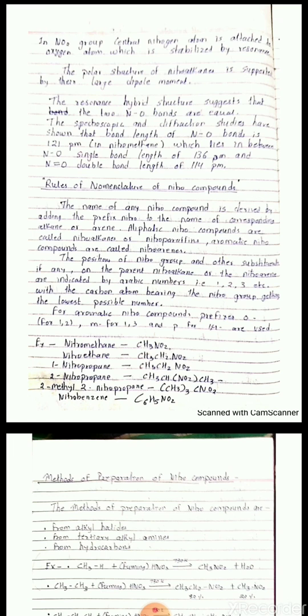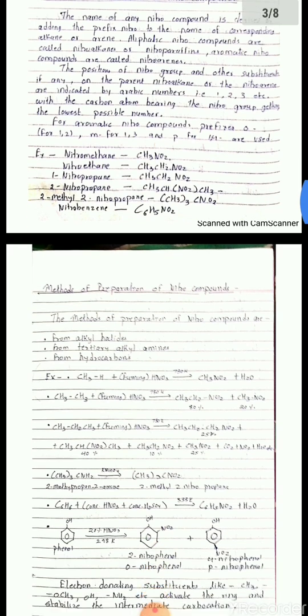For example: nitromethane CH3NO2; nitroethane CH3CH2NO2; 1-nitropropane CH3CH2CH2NO2; 2-nitropropane CH3CHNO2CH3; 2-methyl-2-nitropropane (CH3)3CNO2; and nitrobenzene C6H5NO2.